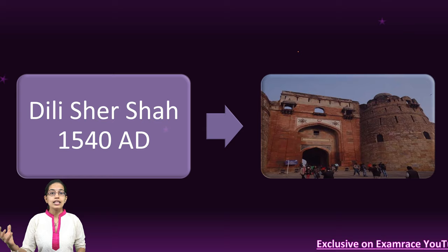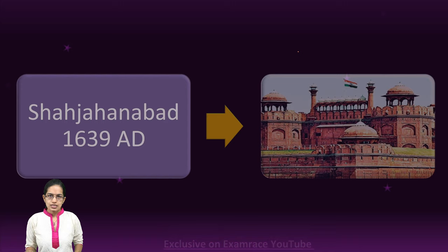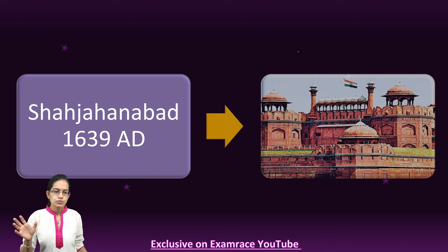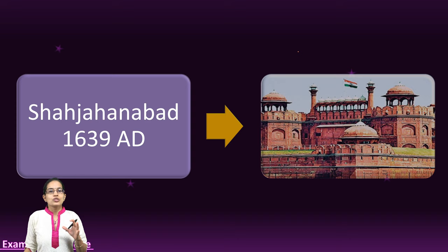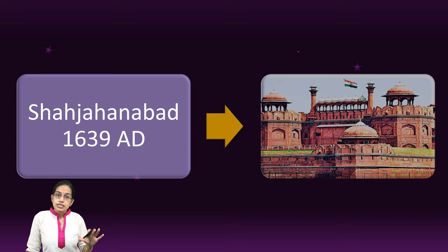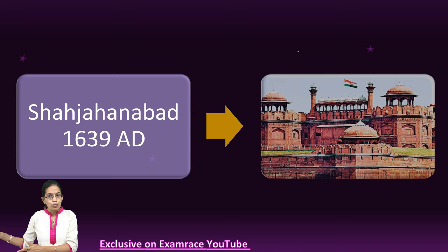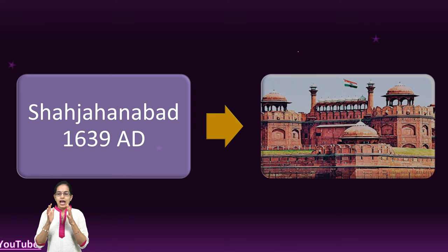The last of the seven cities is Shah Jahanabad. Located close to the Red Fort along the banks of the Yamuna, it was established by Shah Jahan, who built both the fort and the city — a very important development. Numerous magnificent structures were constructed, including the Red Fort and Jama Masjid. This shows the transformation from Tomars to Mughals and later to the British era.